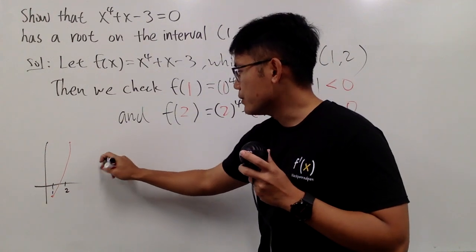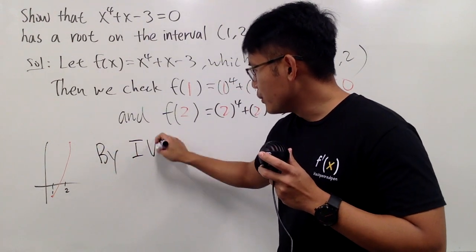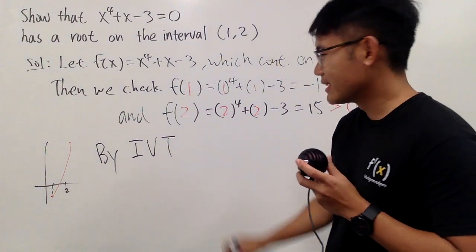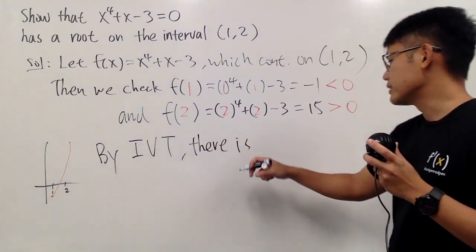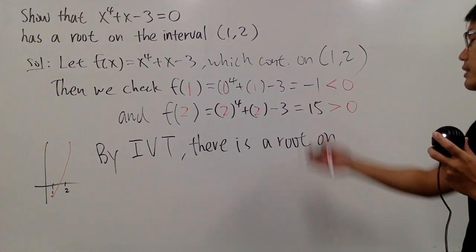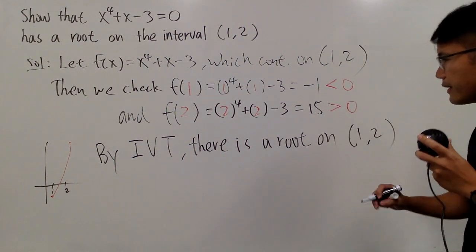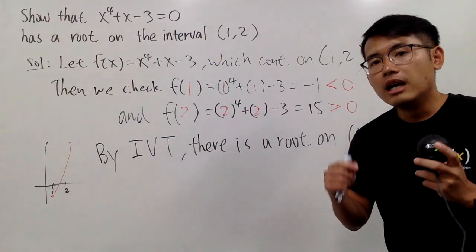So with this being done, we can say that we conclude by the intermediate value theorem, right? There has to be an answer, or just say there is a root, on this interval. And that's pretty much it. I don't need to put this down.